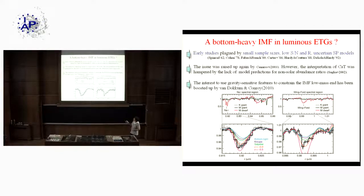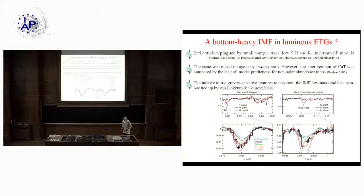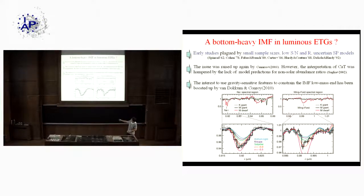This is what can be done in principle using gravity-sensitive features — a simple idea already applied in the 1980s. The idea: spectra of a K-giant, M-giant, and M-dwarf — the giant and dwarf have the same temperature but different gravity and mass. Features like the sodium 8200 feature are prominent in dwarf spectra but essentially absent in giant spectra. The opposite applies to the calcium triplet, prominent in giants but barely seen in dwarfs. Comparing a stacked spectrum of Virgo galaxies (Van Dokkum and Conroy 2010) to SSP predictions, the sodium feature is stronger and more consistent with a bottom-heavy IMF — an enhanced fraction of low-mass stars.